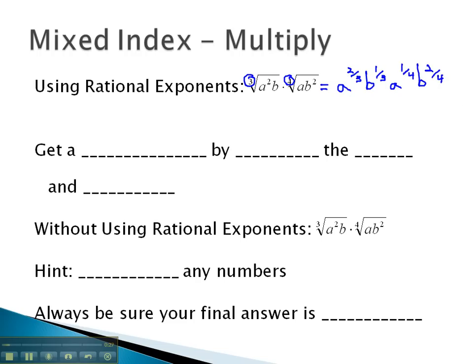In order to combine these together, we would want to add the exponents together. But before we can add exponents, we need to have a common denominator. Let's make everything have a common denominator of 12.